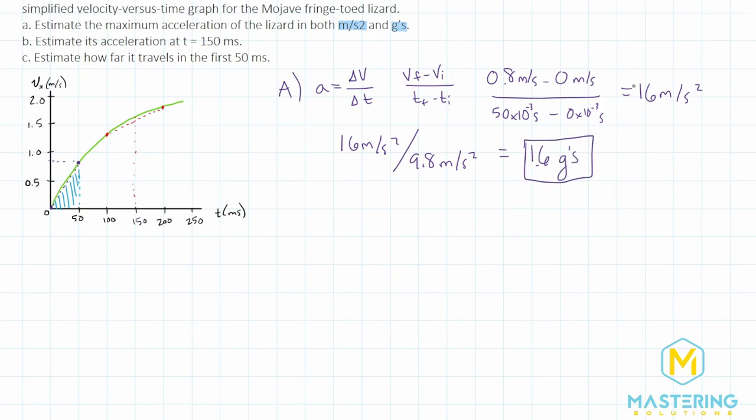16 divided by 9.8 gives us 1.63 or 1.6 G's. It makes sense as well, because what's happening is 9.8 is essentially 10. So whenever you divide something by G, you're essentially within rounding distance of just moving a decimal place over. So 1.6 G's and 16 meters per second squared for part A.